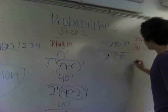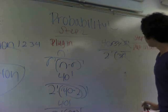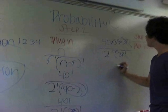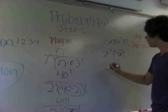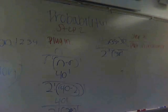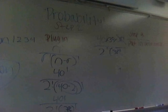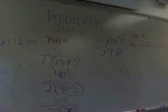And then the 38's cancel out, so we're going to plug into our calculator 40 times 39 divided by 2, which is going to be 780.